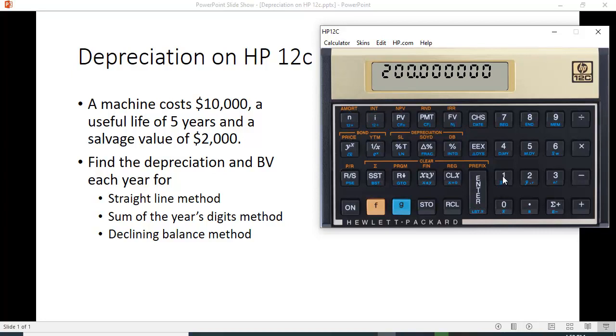To get the answer, hit one, function, and above the percent key is DB for declining balance. So $4,000. We can't swap that for the first year.